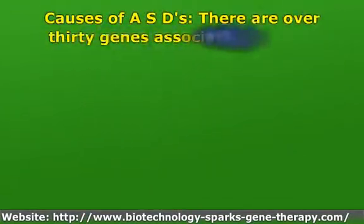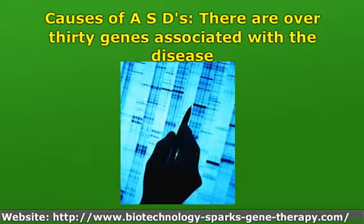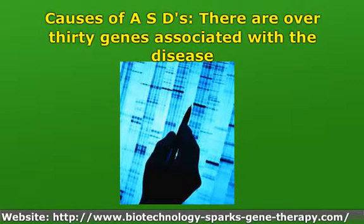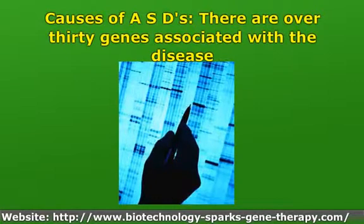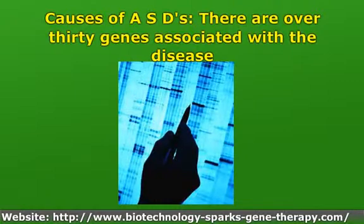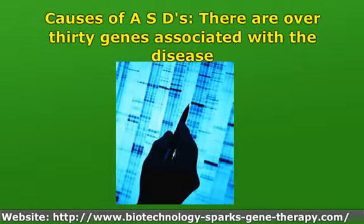There are over 30 genes associated with ASDs. Inherited genes that cause ASDs contribute about 90% of the risk of a child developing the disease, and a genetic cause can be identified in a quarter of children with the disease. Children who have a sibling with ASDs are at higher risk. About 10% of children with ASDs have an identifiable genetic disorder such as Fragile X syndrome, Tuberous Sclerosis, or Down syndrome. Autism may not have a single cause, but a complex of disorders with a set of core aspects that have distinct causes.